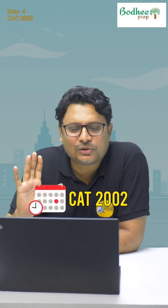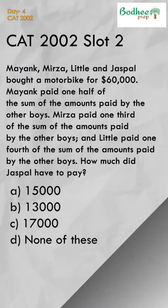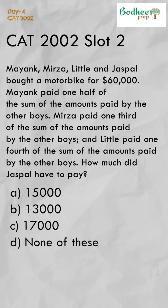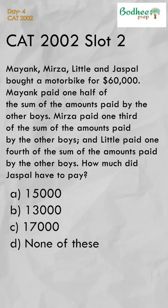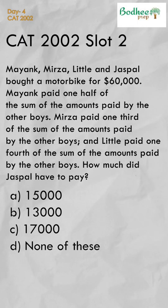Today's question is a little old — a CAT 2002 question — but a nice logical question. Mayank and Mirza have 60,000 and there are some conditions.